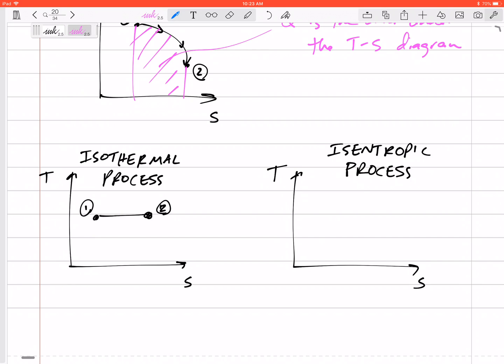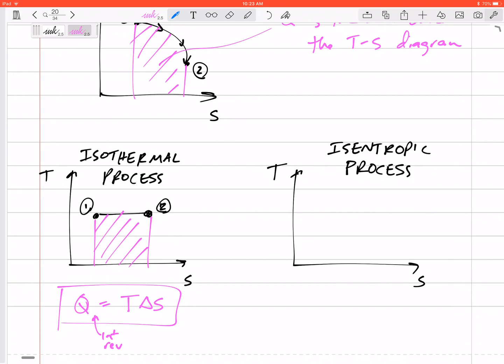But the Q would be this area under the curve, which is a rectangle for an isothermal process. Q would be temperature times delta S for internally reversible Q equals T delta S. Again, that's only for isothermal.